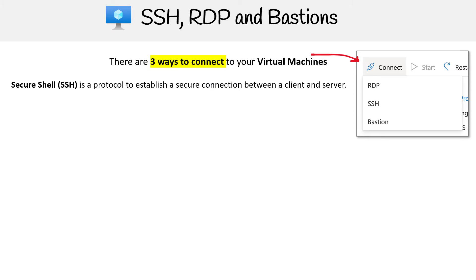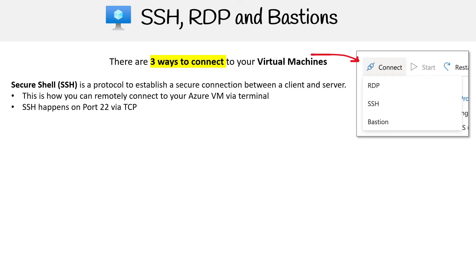The first is Secure Shell, and this is a protocol to establish a secure connection between a client and server. This is how you can remotely connect to an Azure virtual machine via a terminal. SSH happens on port 22 via TCP — port 22 is something you should absolutely remember as SSH. You will generally use an RSA key pair to gain access; you can also use username and password, but most people don't do that anymore.